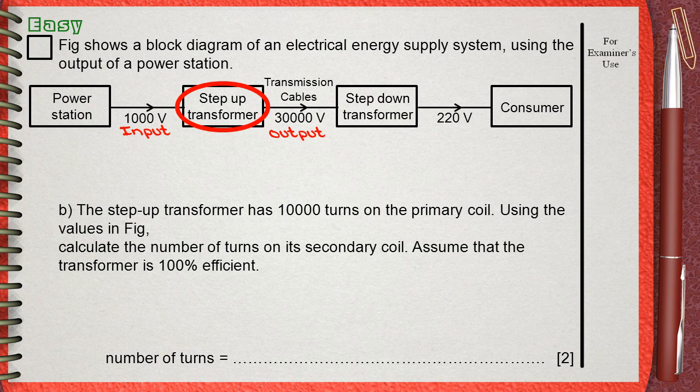This rule is N_in divided by N_out. N is the number of turnings. This equals V_in divided by V_out. V is the voltage.